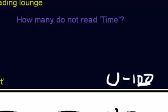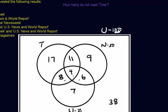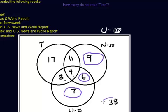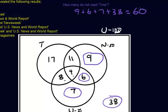Final question: how many do not read Time? The people who do not read Time are those in only-Newsweek, the Newsweek and U.S. News overlap, only-U.S. News and World Report, and the outside region who don't read any magazine. Adding those up, the final answer is 60. That's a good example of solving a word problem involving three sets using a Venn diagram.